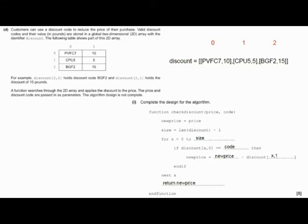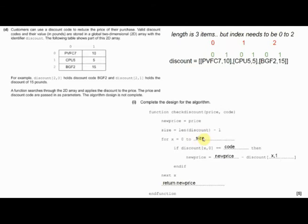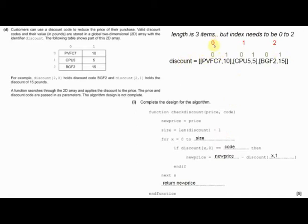I've created this because this is actually what it would look like. So we've got 'discount' and each one of these rows is a mini array. We've got the two open square brackets showing we've got a 2D array, but the one square bracket is the 'discount' - the main discount array. Inside that main discount array, each element is itself an array: PVFC7 and 10 as the first row, CPU5 and 5 as the second row, and BGF2 and 15 as the third row.